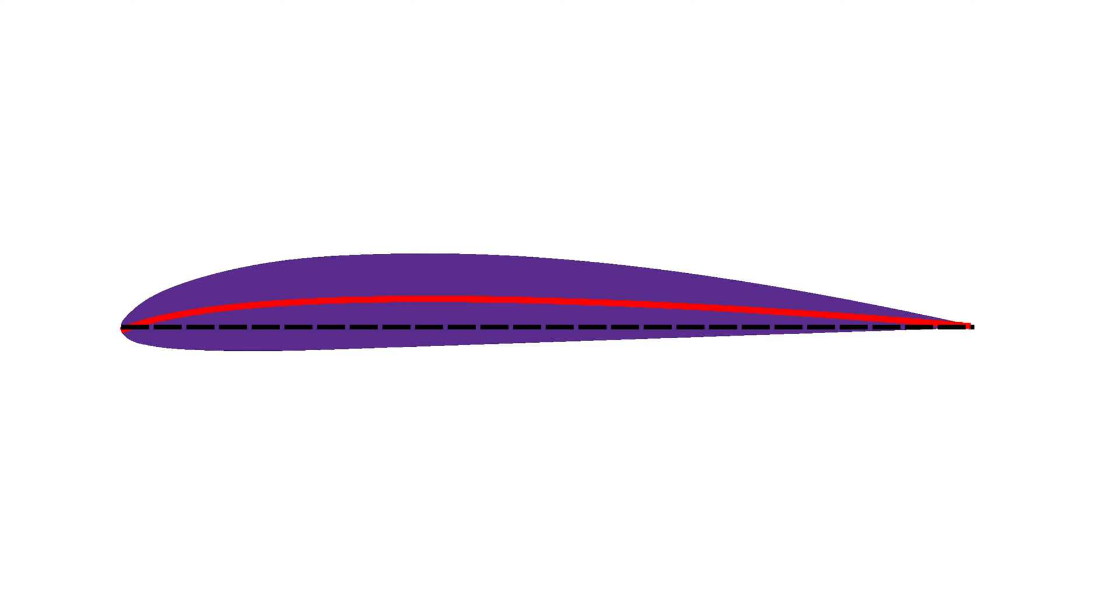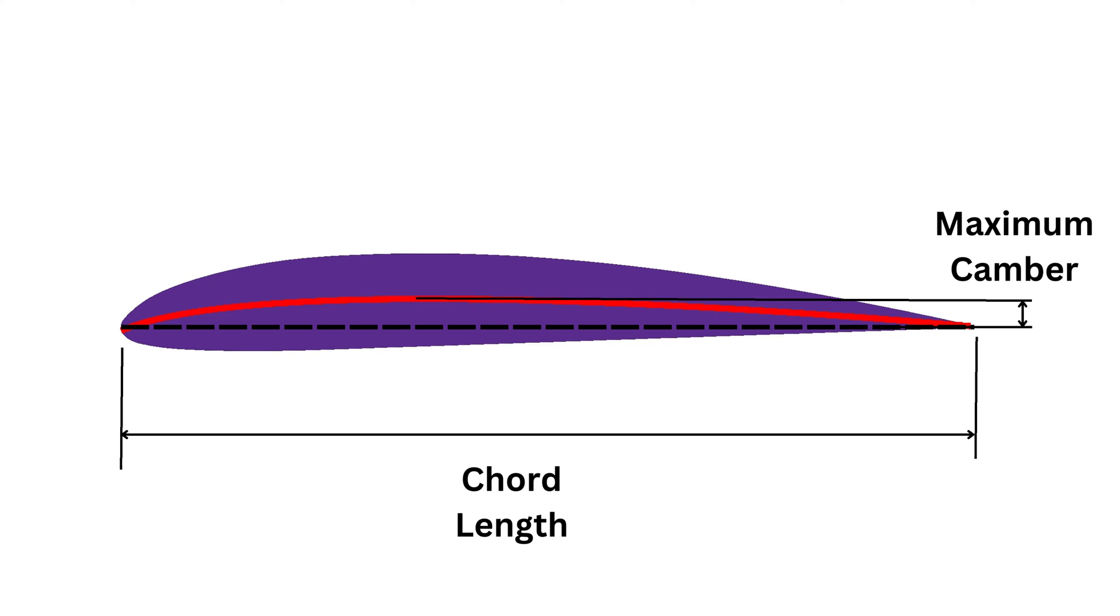There are three main metrics used to describe the geometry of an airfoil. The cord length is the total length of the cord line. It measures the size of the airfoil. The maximum camber is the maximum distance between the cord and camber lines. It is a measure of how curved the airfoil is.